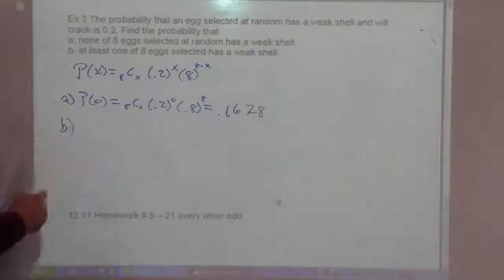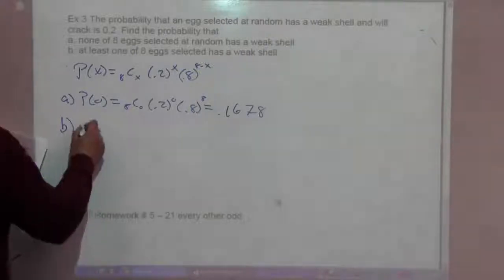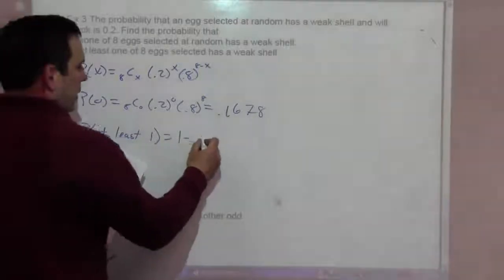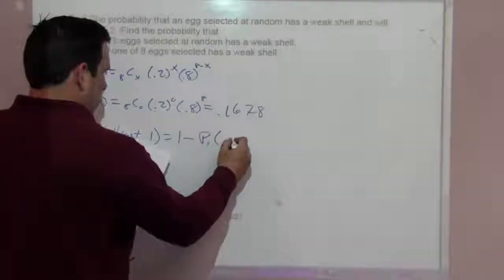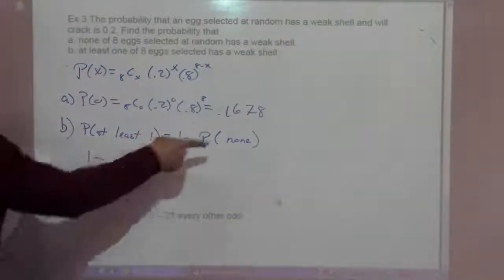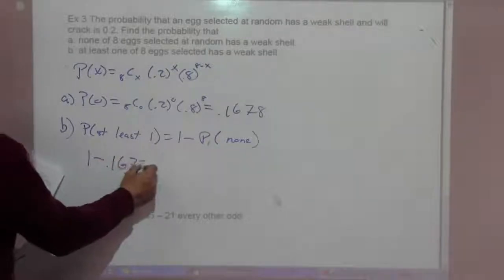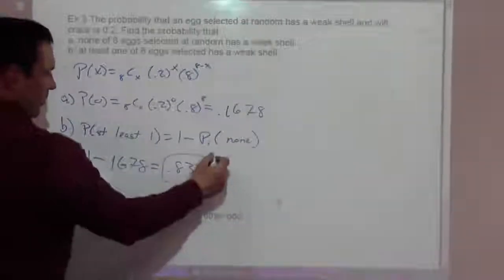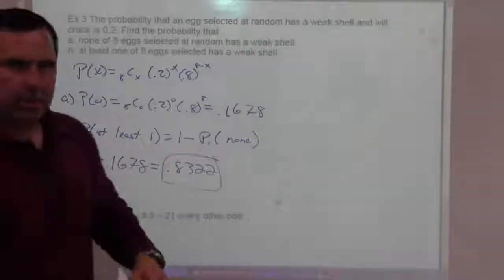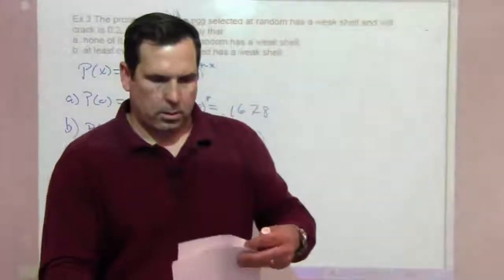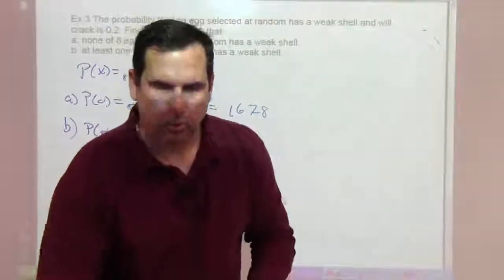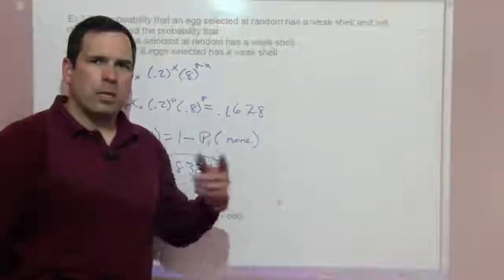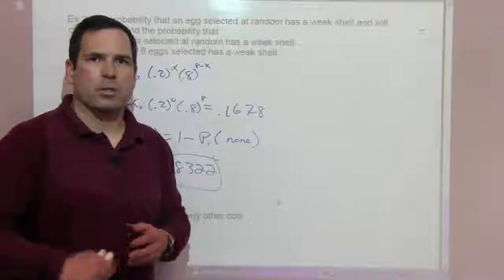Part B says at least one of the eight eggs selected has a weak shell. The probability of at least 1 is 1 minus the probability of none. That's 1 minus .1678, which equals .8322. Well that will do it for our chapter 12, section 12.11 Binomial. I hope you enjoyed the Binomial Theorem. It's not as bad as you think when you get into it. Try working the problems, and I'll see you guys online when we meet with some of your questions. Thank you.